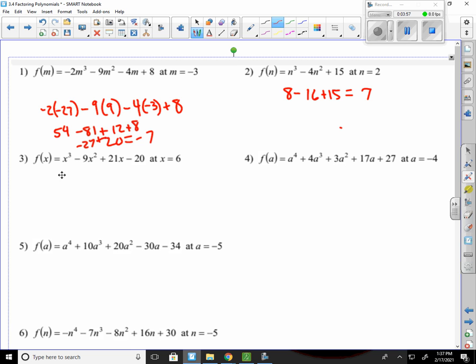Number 3. Plug in a 6. 6 to the 3rd is 216. Then that would be minus 9 times 36. Plus 21 times 6. And then minus 20, which is negative 2. Still not a factor.